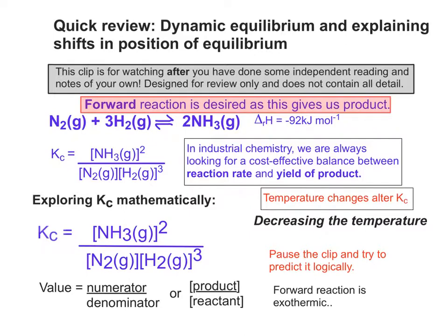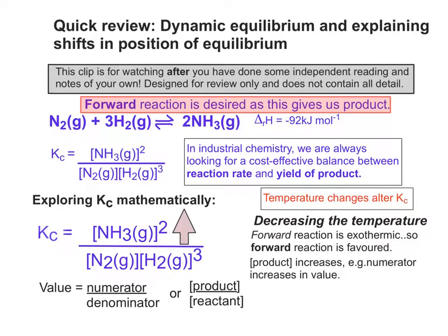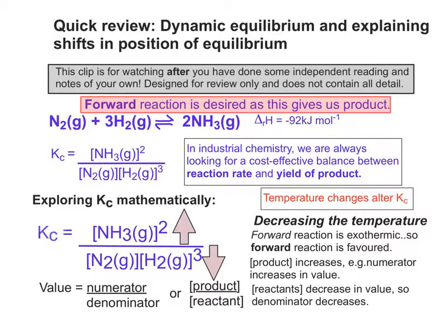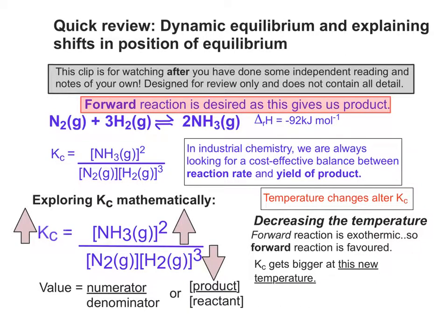When temperature is decreased, the forward reaction must be favoured. The concentration of product increases — the numerator — and the reactants decrease, so the denominator decreases. Because you have a bigger number divided by a smaller number, Kc gets bigger at this new temperature. The position of equilibrium has shifted to the right, and Le Chatelier's principle has been obeyed.